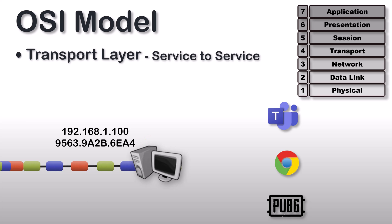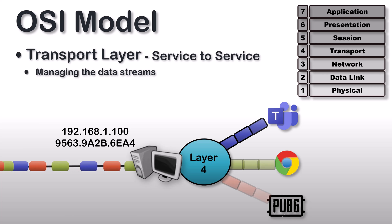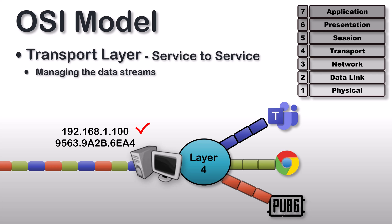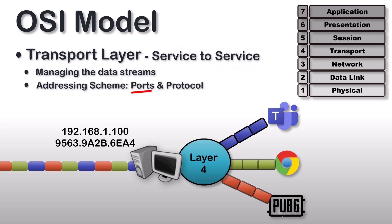The question is: how do we make sure the right program receives the right data? This is where layer 4 comes into play. Layer 4 is there to manage the data stream. It is going to take all the incoming data and make sure the right program receives the right data. Just as layer 3 had an addressing scheme for end to end delivery and layer 2 had its own addressing scheme for hop to hop delivery, layer 4 also has its own addressing scheme to accomplish its goal, that is service to service delivery.